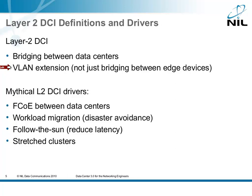Those of you that read my blog know that I'm extremely opposed to this idea. And whenever I'm provoking people to tell me what the reason is to use Layer 2 DCI, these are the four things that come to their mind: FCoE between data centers, workload migration either for business agility or disaster avoidance, follow the sun to reduce latency, or stretched clusters.